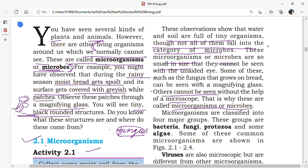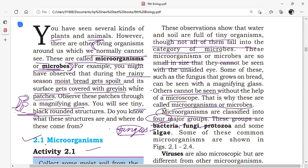How many types of microorganisms are there? Microorganisms are classified into four major groups: bacteria, fungi, protozoa, and algae. There are four groups present in microbes.